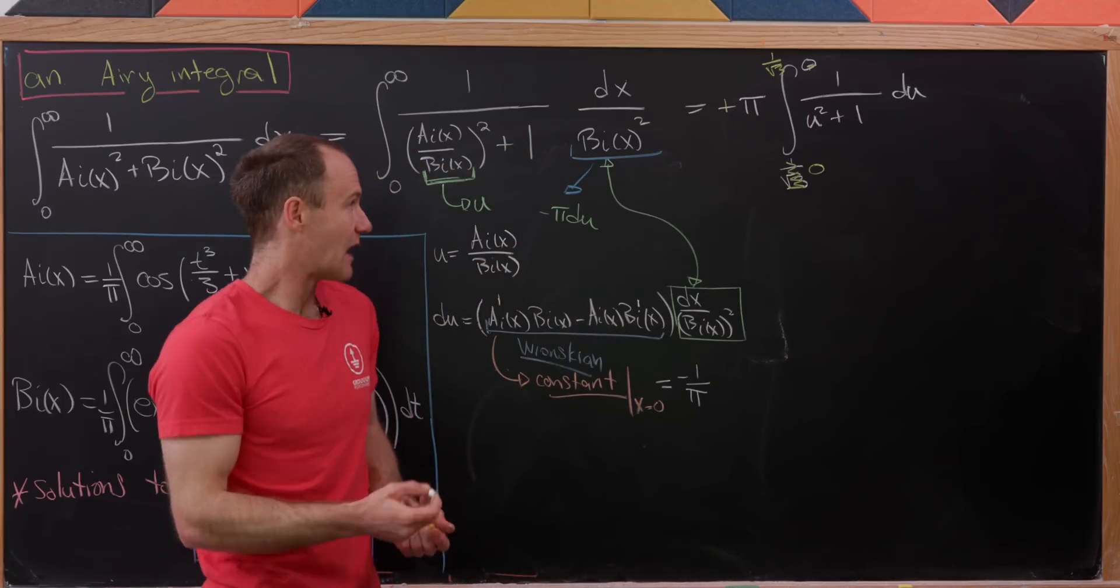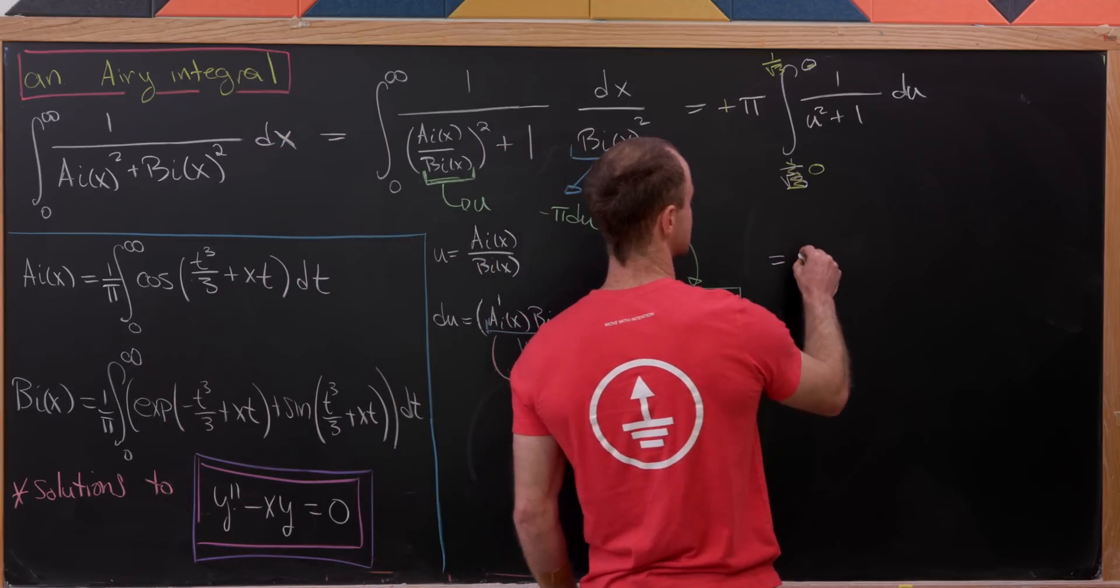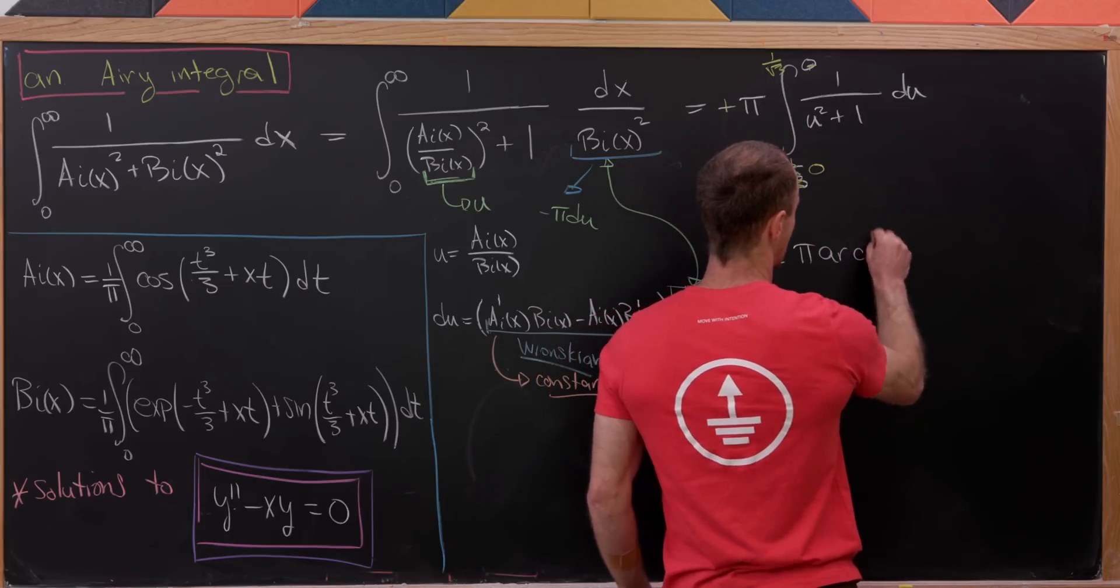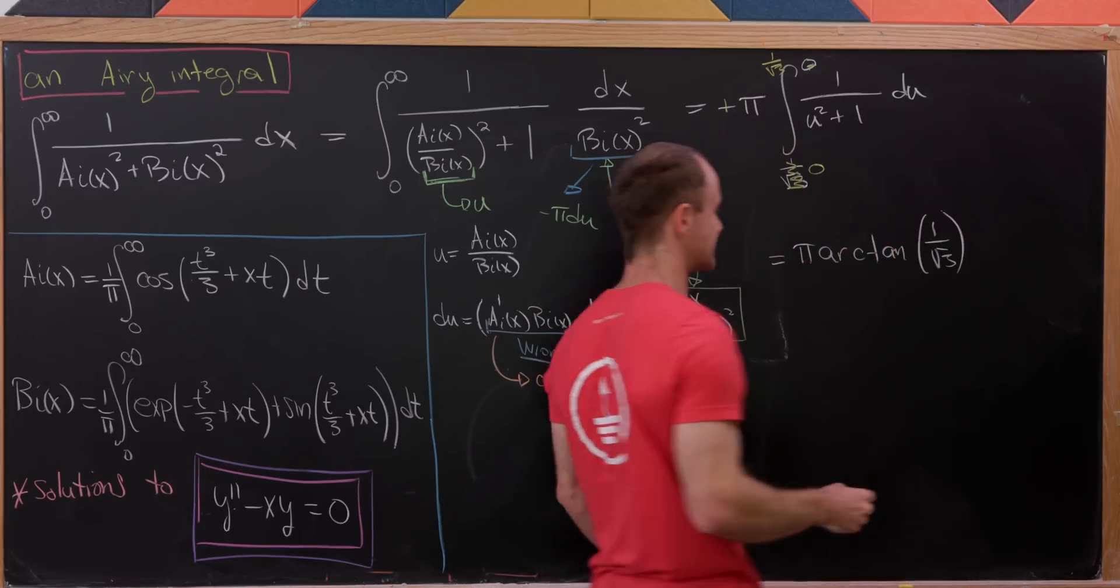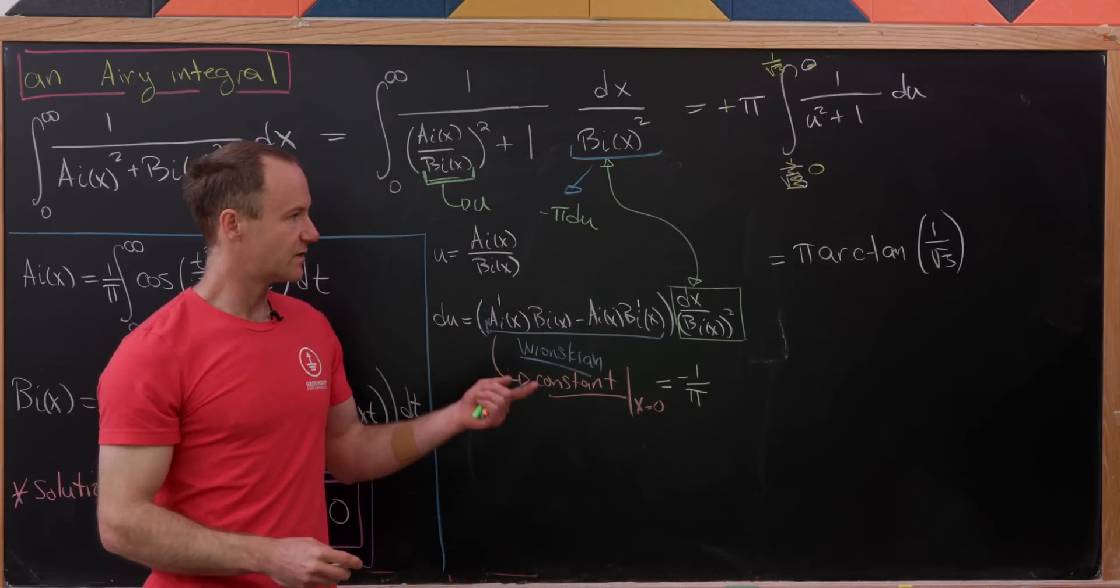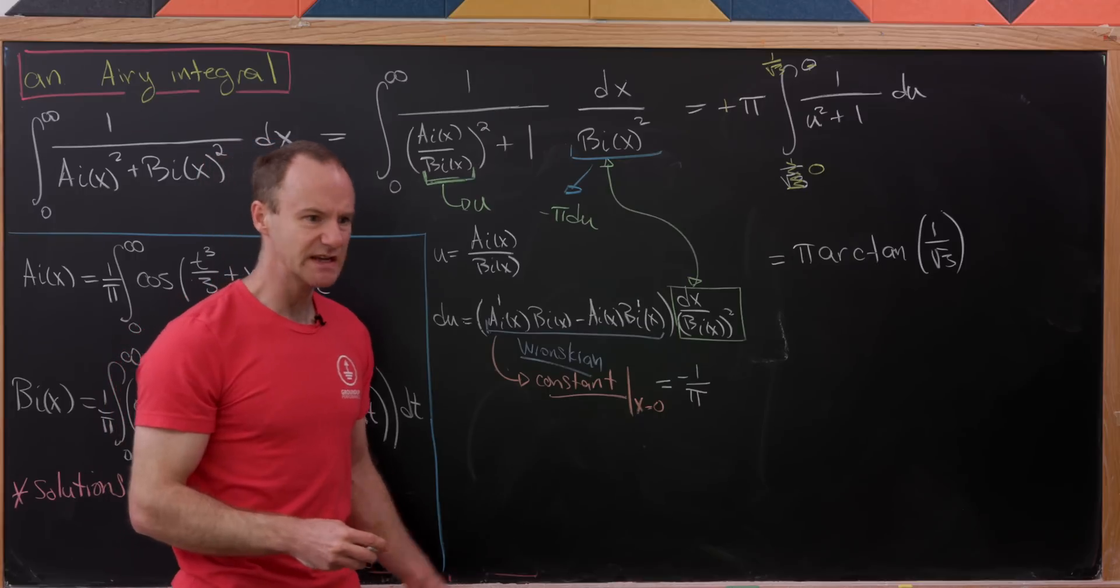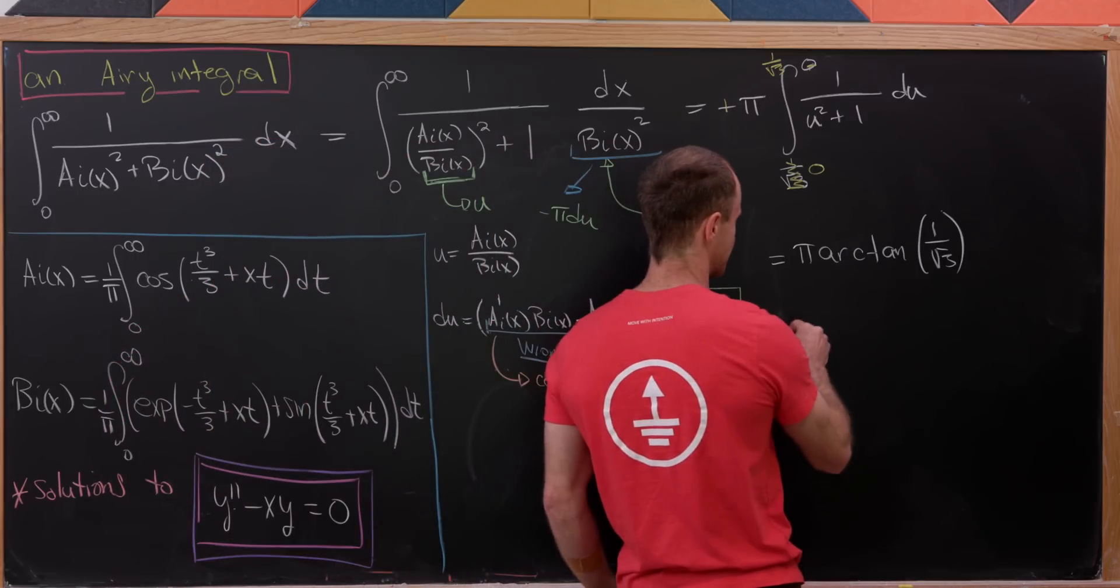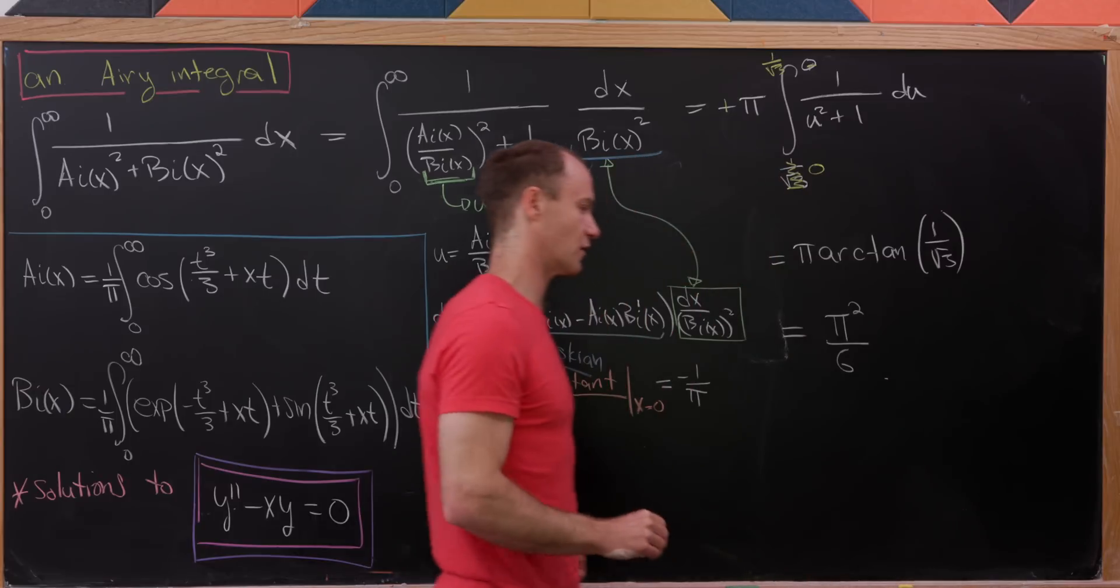And now all we have to do is take the antiderivative and plug in the two bounds. So this is going to be pi and then the arctan of 1 over root 3, minus the arctan of 0, but the arctan of 0 is 0. But the arctan of 1 over root 3 is very calculable. It's in fact equal to pi over 6. So that gives us a final answer of pi squared over 6.